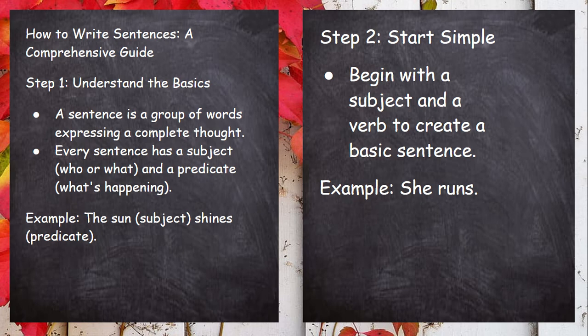Let's look at an example. The sun is the subject; shines is the predicate. This is a simple sentence: the sun is the subject, and shines is the predicate.